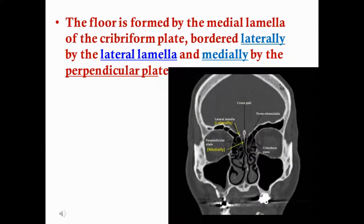The floor of the olfactory fossa is formed by the middle lamella of the cribriform plate, which is bordered laterally by the lateral lamella — shown by the yellow arrow — and medially by the perpendicular plate, also shown by the yellow arrow in the CT scan figure.